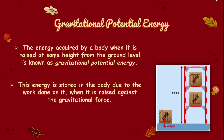Let us see what is gravitational potential energy. The energy acquired by an object when it is raised to some height from the ground level is known as gravitational potential energy. This energy is stored in the body due to the work done on it when it is raised against the gravitational force. Look at this diagram — a wooden box has some weight, and in order to displace this box to a certain height, work must be done. This work done is stored as gravitational potential energy at that height.